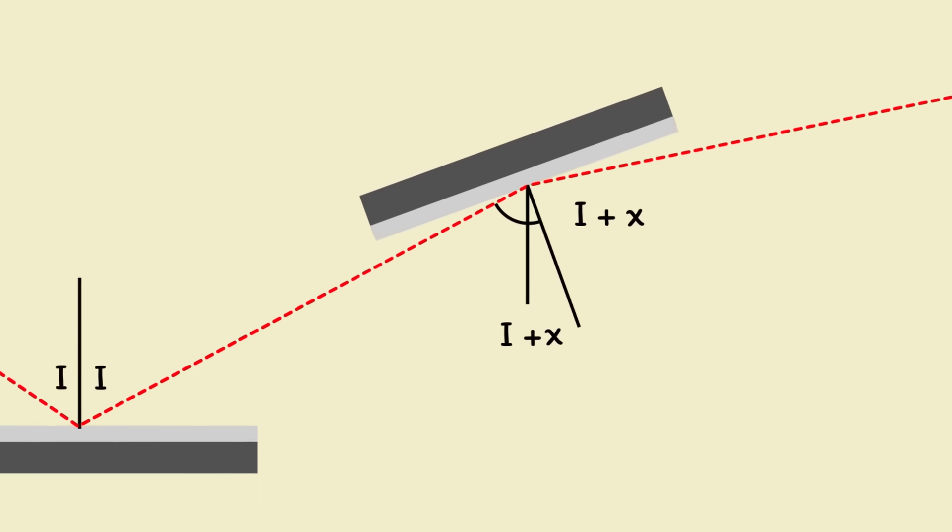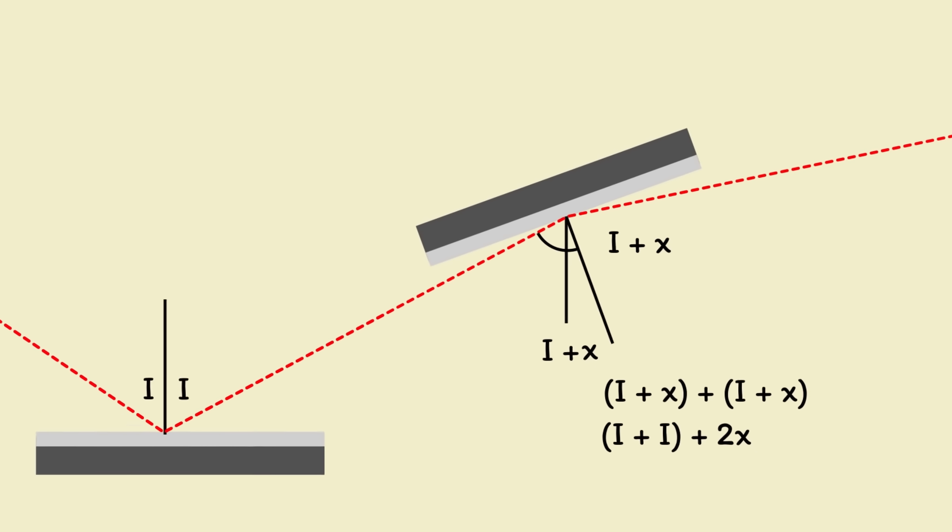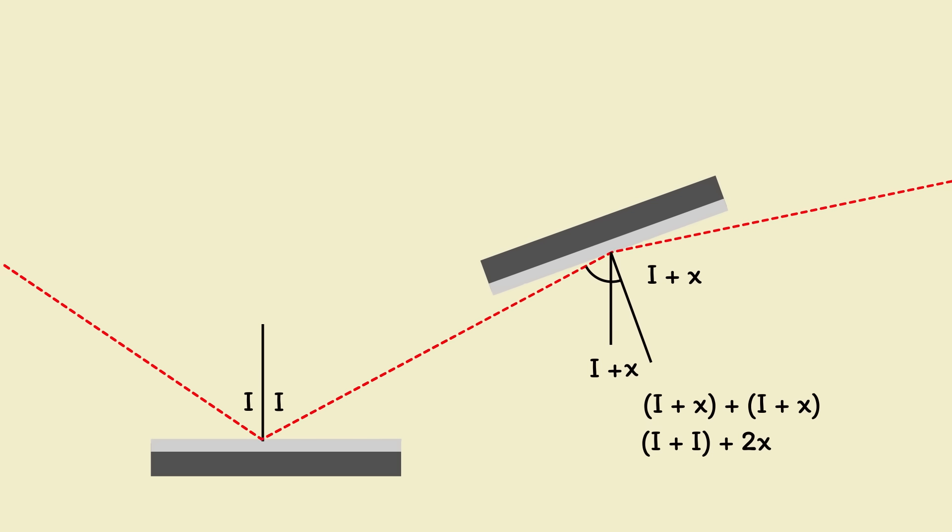If we look solely at the second mirror, the total deflection of the ray of light is I plus X plus I plus X. And rearranging this gives I plus I plus 2X. Compared to the first mirror, the difference is 2X. Overall, the reflected ray has been deflected by twice as much as the angle between the mirrors.